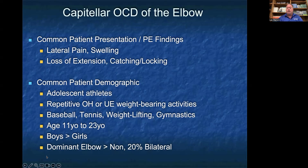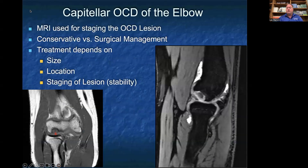As with the other two common OCDs, MRI is used for staging of a capitellar OCD as well. This guides our management, whether it's conservative or surgical. Treatment depends on size, location, staging of the lesion, and how stable the lesion is. On the bottom left MRI, where that red arrow is, you can see a capitellar OCD on a coronal slice. On the right, a sagittal slice shows the OCD lesion on the distal humerus just above the radial head, with fluid behind the image and the small piece of the capitellar OCD visible.